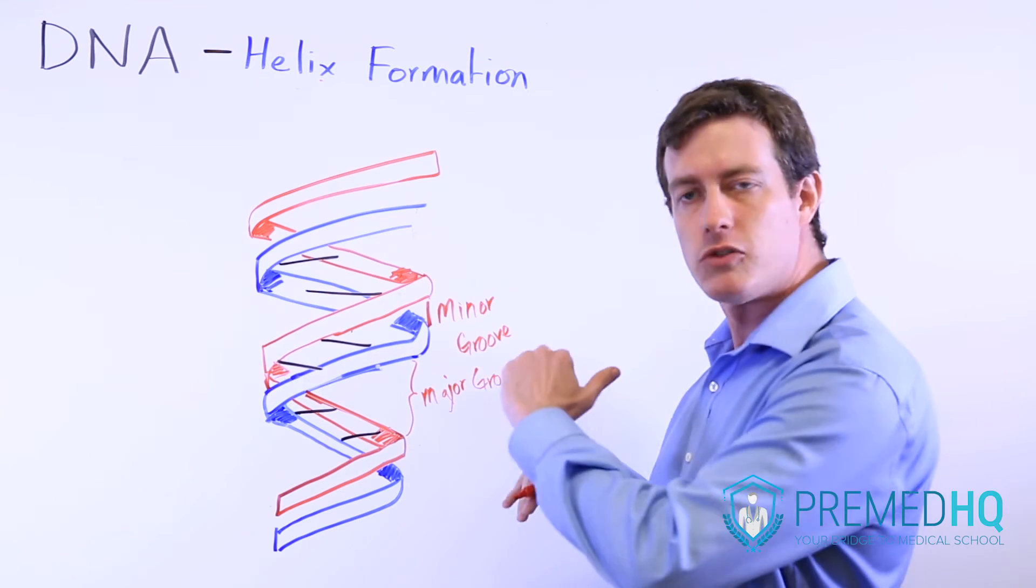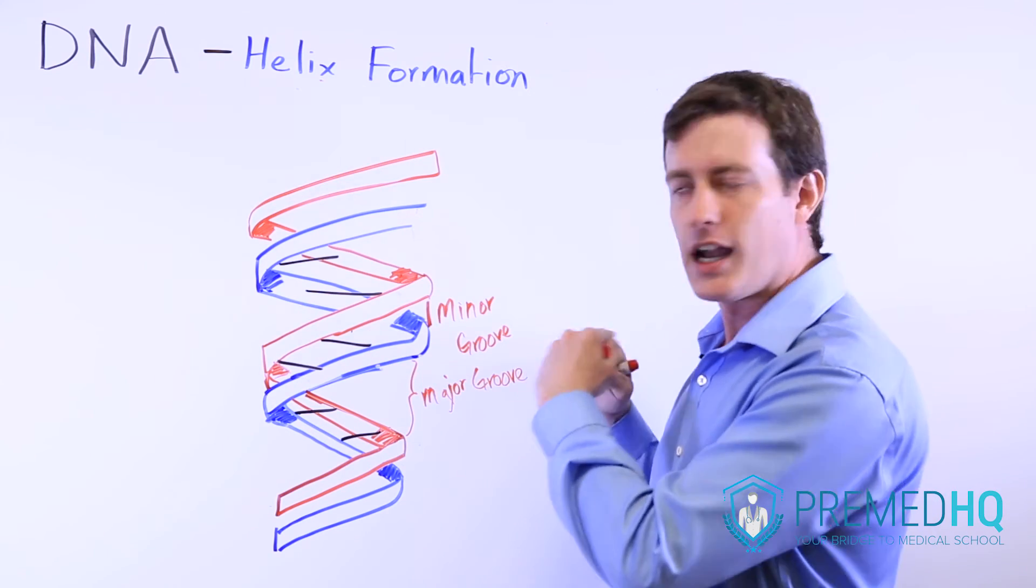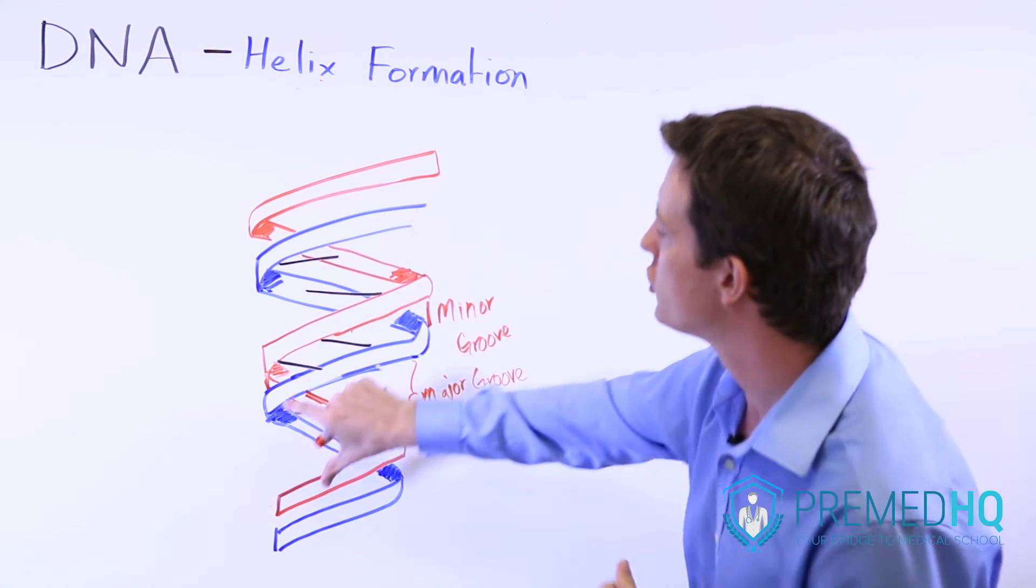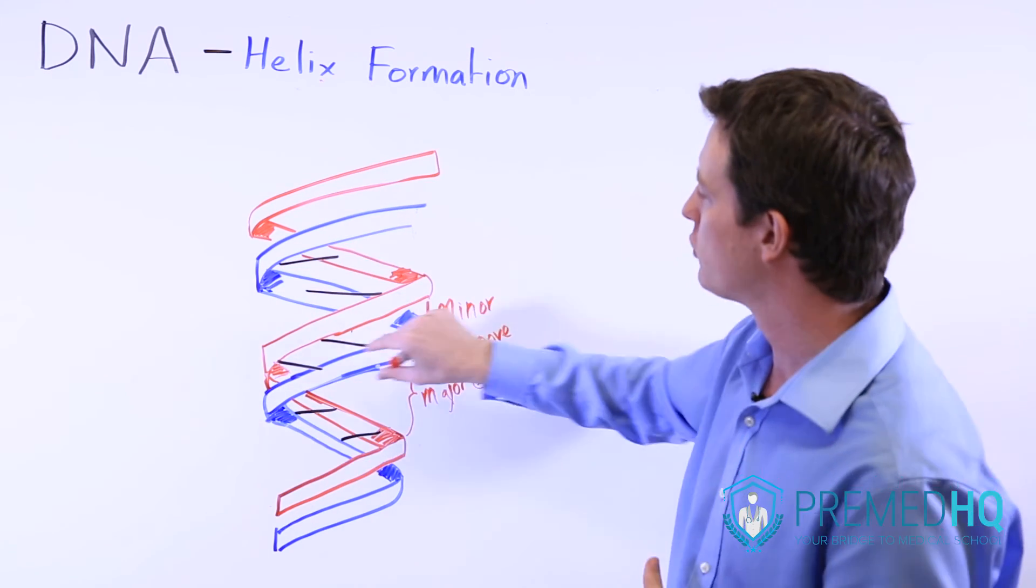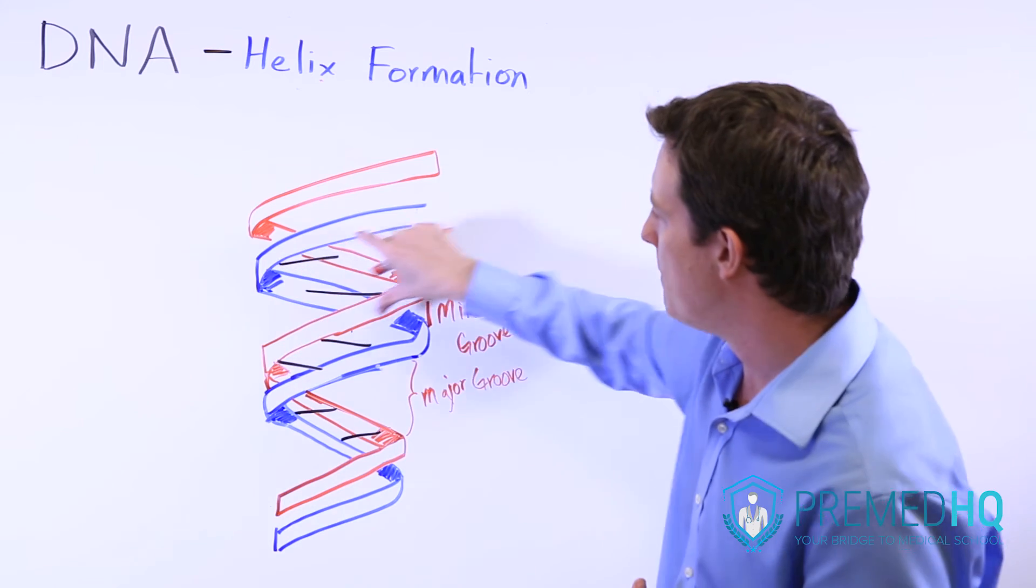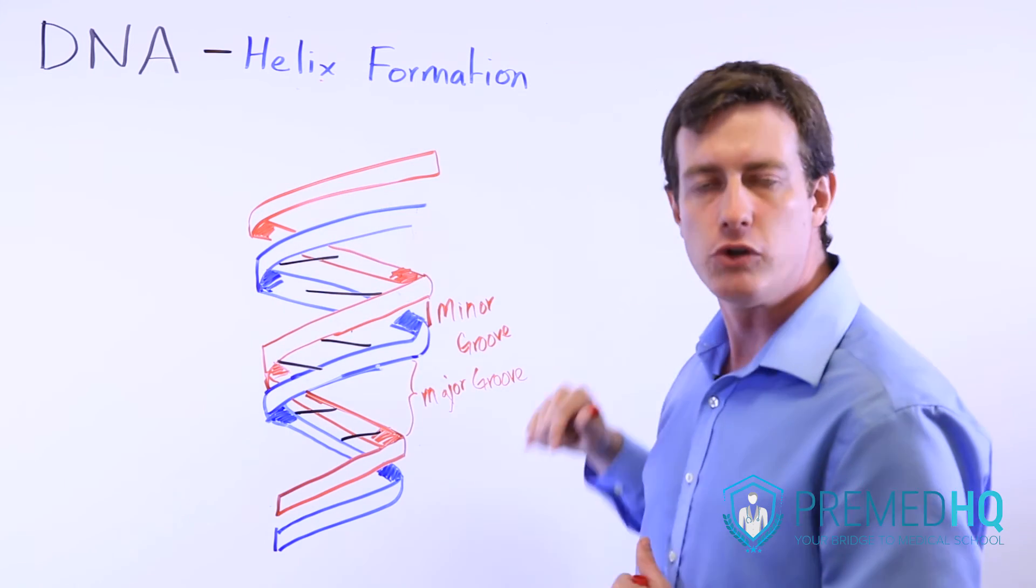You have the minor groove where the two strands are very close to each other, and the major groove where there's a larger distance. So it alternates major groove, minor groove, major groove, minor groove, and so on.